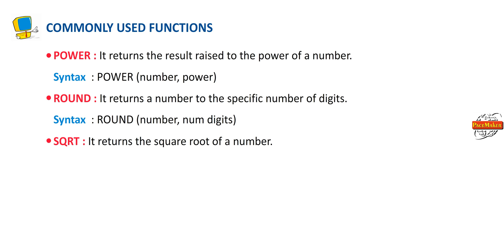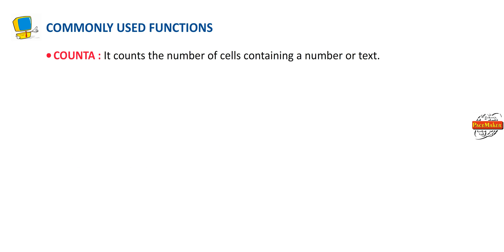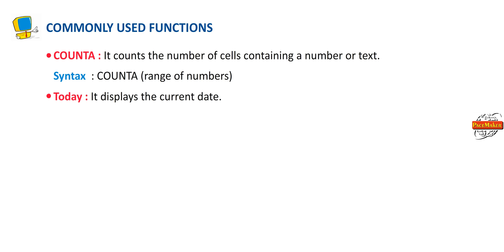SQRT — returns the square root of a number. Syntax: SQRT(number). COUNTA — counts the number of cells containing a number or text. Syntax: COUNTA(range of numbers). TODAY — displays the current date. Syntax: TODAY().